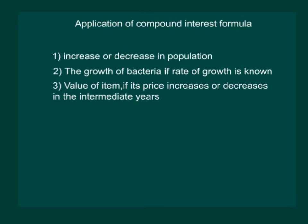There are some situations where we could use the formula for calculation of amount in compound interest. Here are a few: We can use the formula of compound interest in case there is an increase or decrease in population, if the growth of bacteria has to be calculated if the rate of growth is known, and to find the value of an item if its price increases or decreases in the intermediate years.